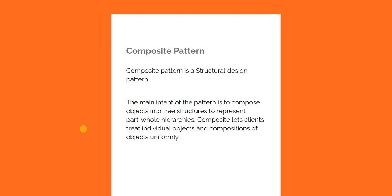We deal with hierarchical objects at some point or another. Hierarchical objects usually consist of nodes and leaves, and the hierarchy starts with a base or root node. This is also known as recursive composition, and a classic example is the folder structure on a PC. The biggest challenge with this kind of object representation is providing a uniform structure or contract between the leaf and the node — and this is exactly the problem the composite design pattern tries to solve.